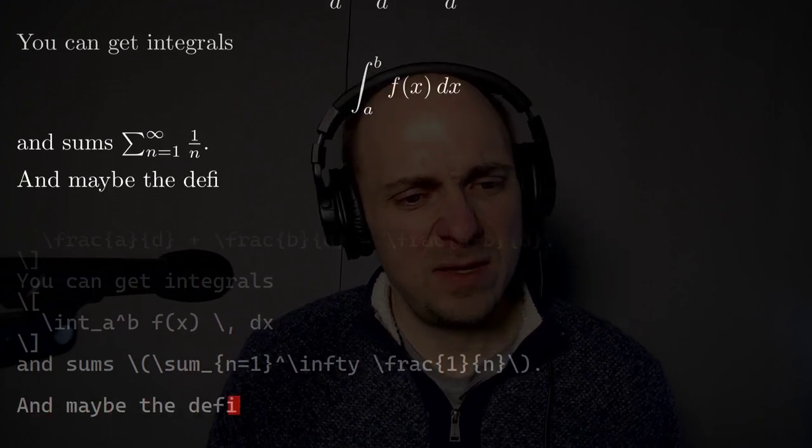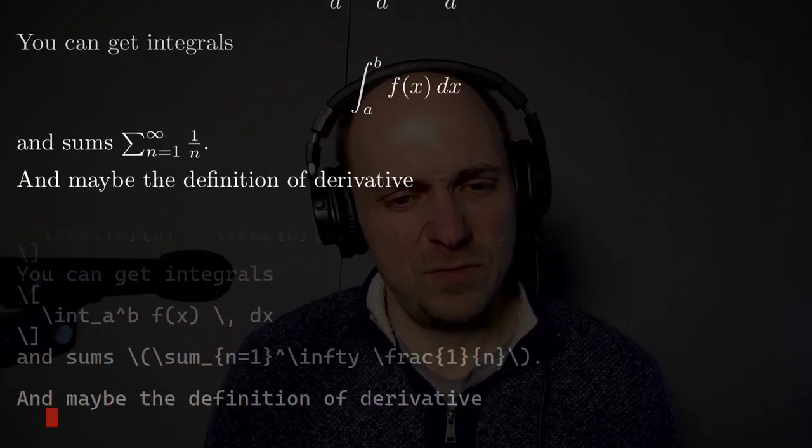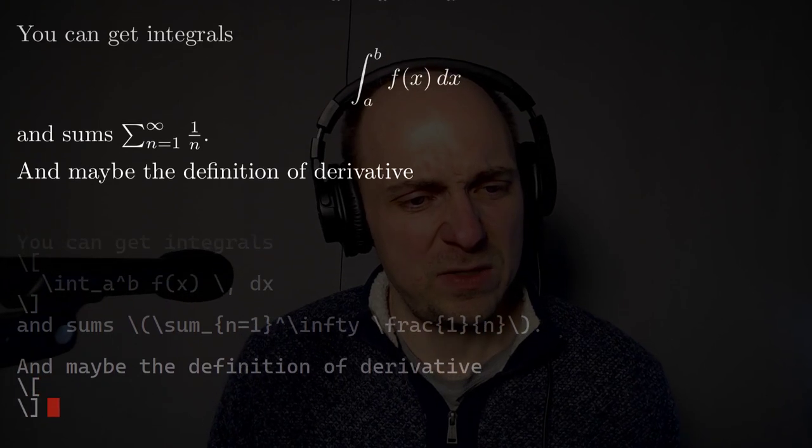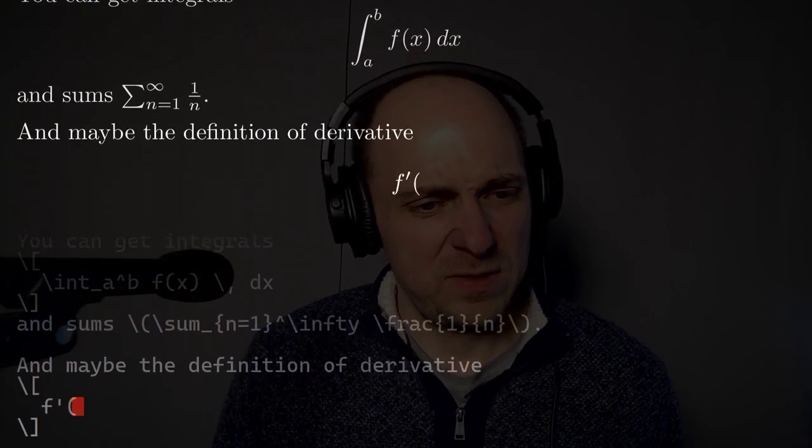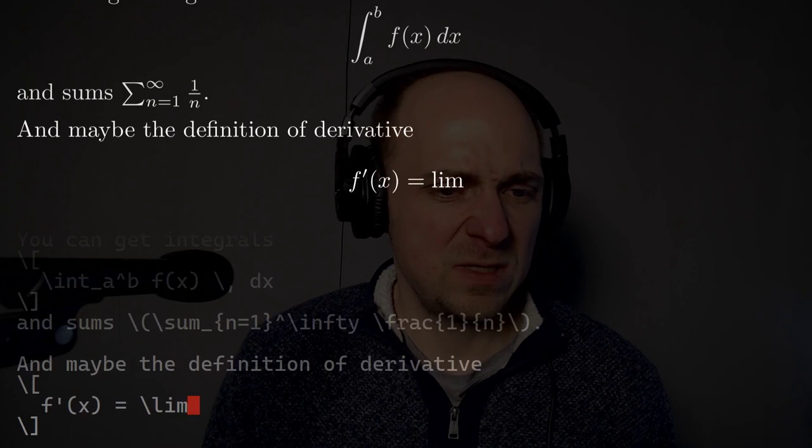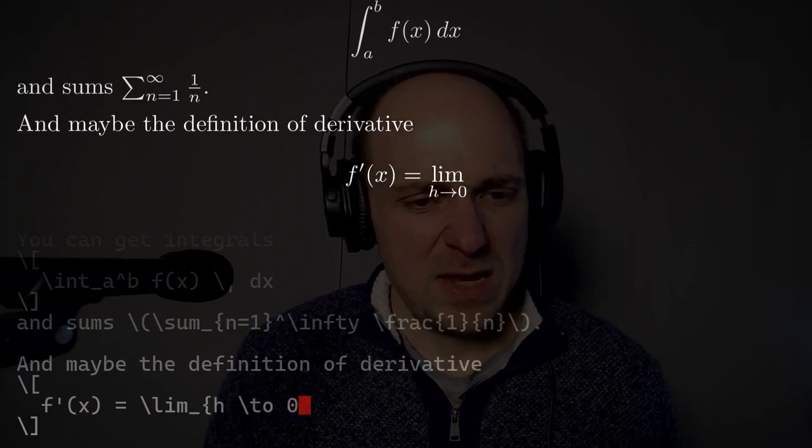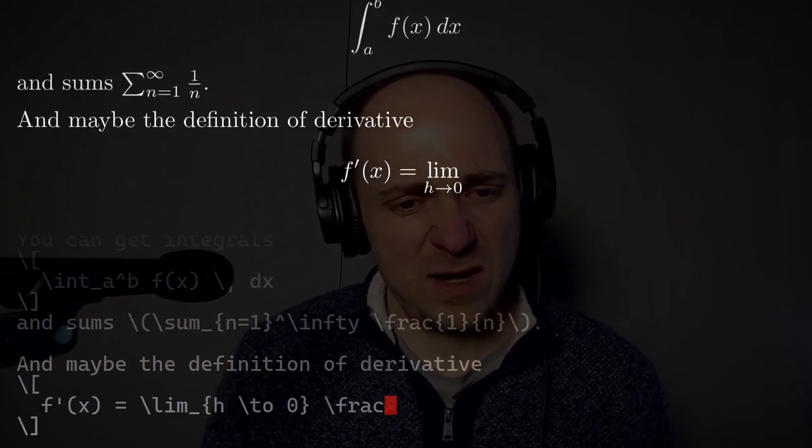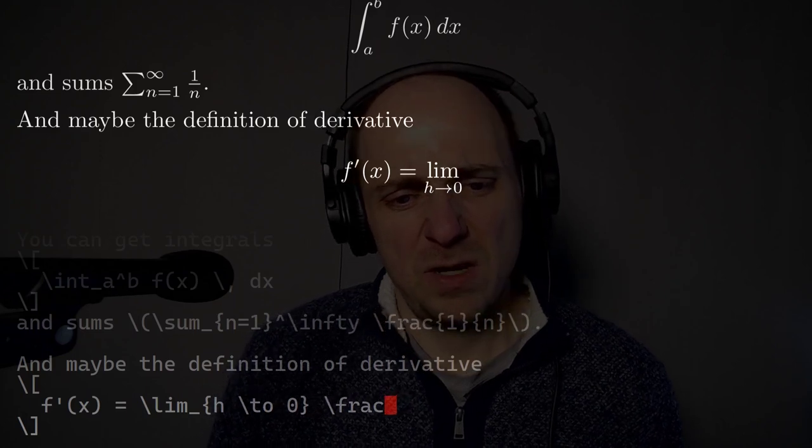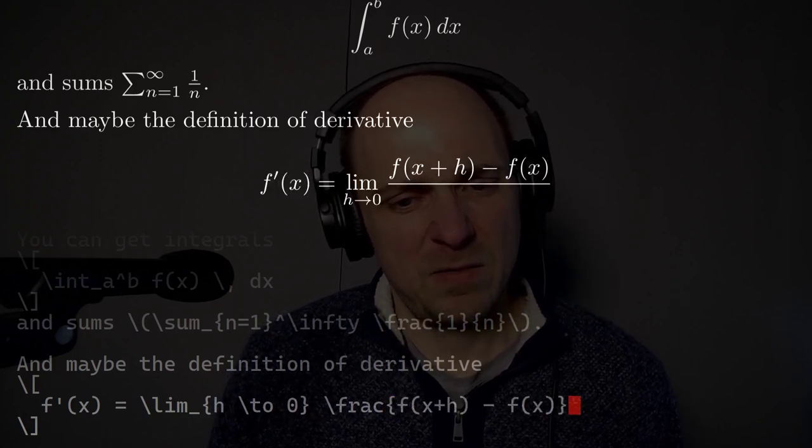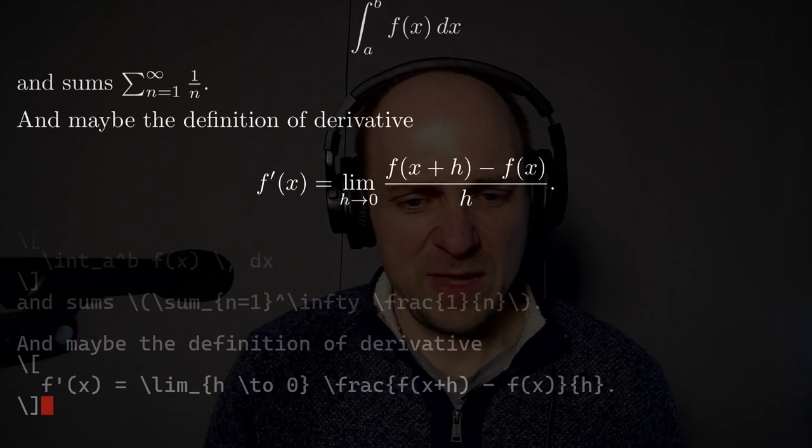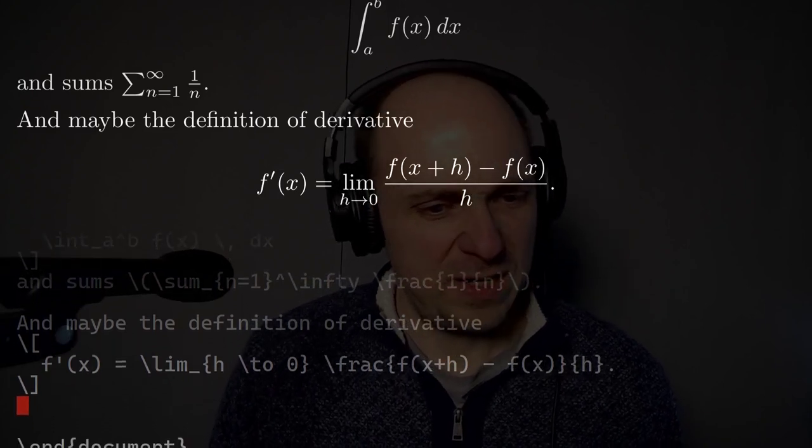Let's see, and maybe the definition of derivative would be a reasonable thing to end with. So I'll write f prime of x equals the limit h to 0 of the fraction f of x plus h minus f of x all over h. So that looks pretty nice.